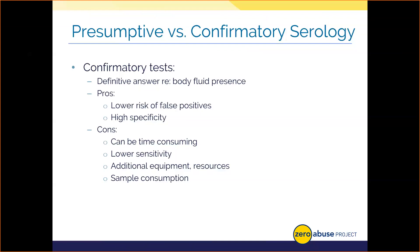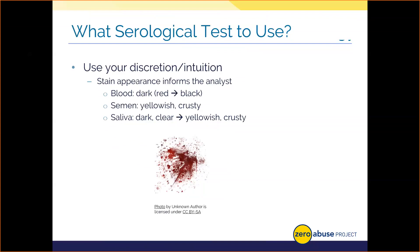Confirmatory tests also require more sample. The analyst has to use discretion to decide if they have enough sample or if they even want to do serological testing and just move straight to DNA. At this point in the lab, I should have examined a given item extensively through visual observation and should have stains identified if they're present. Based on the physical appearance or ALS-based evaluation, I'll proceed with the most logical serological test. Blood is typically dark red to brown or black.